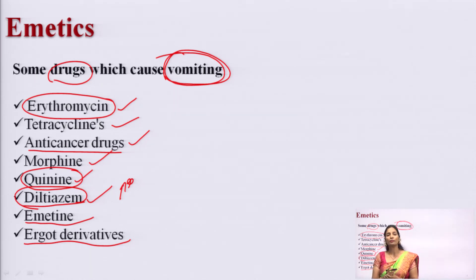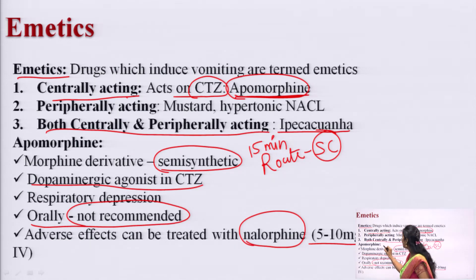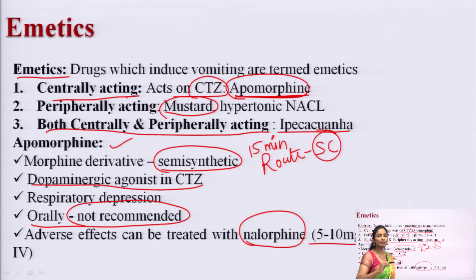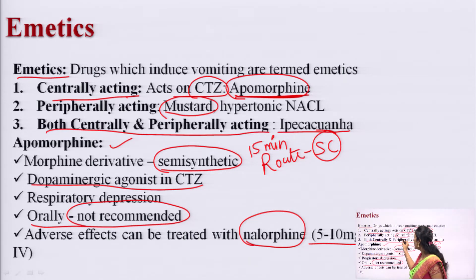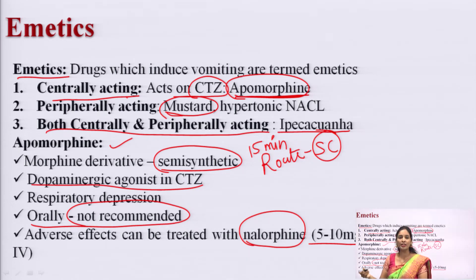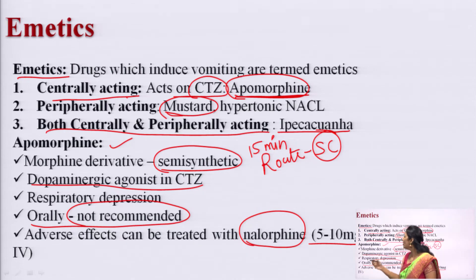Regarding peripheral acting drugs, mustard is a substance easily available at home. By mixing one teaspoon of mustard in one glass of water, it can induce vomiting. It acts peripherally and shows emetic action.